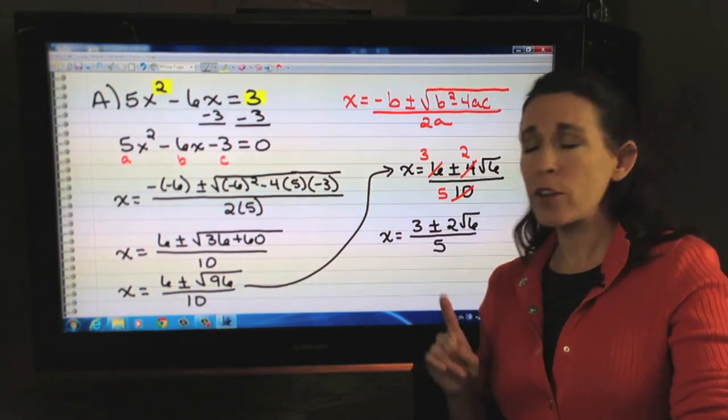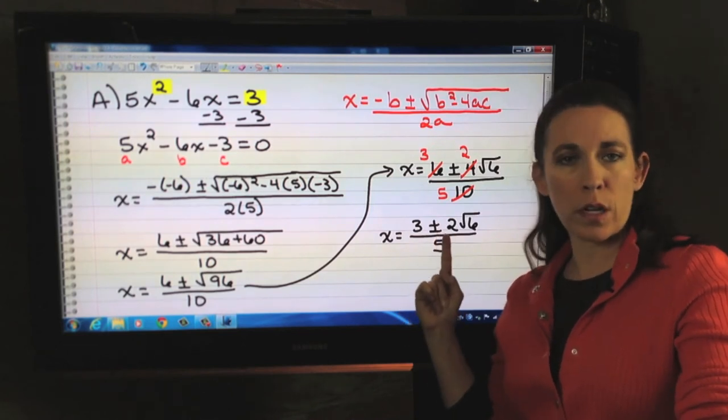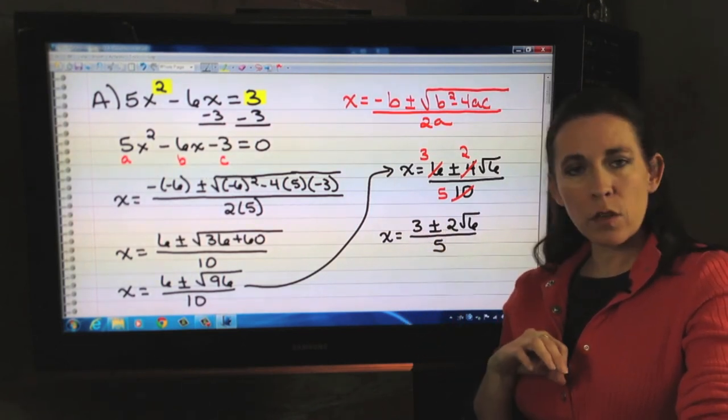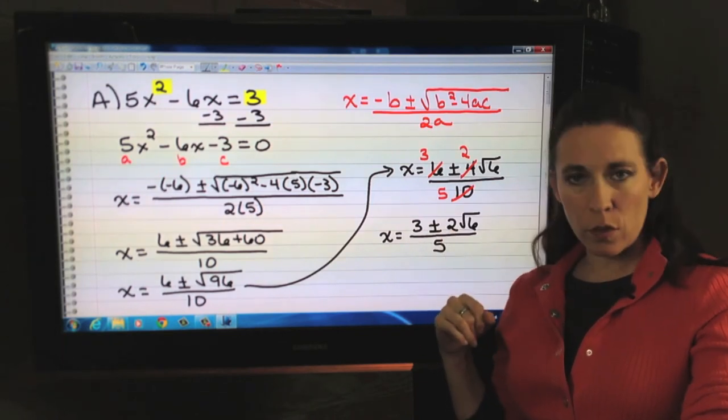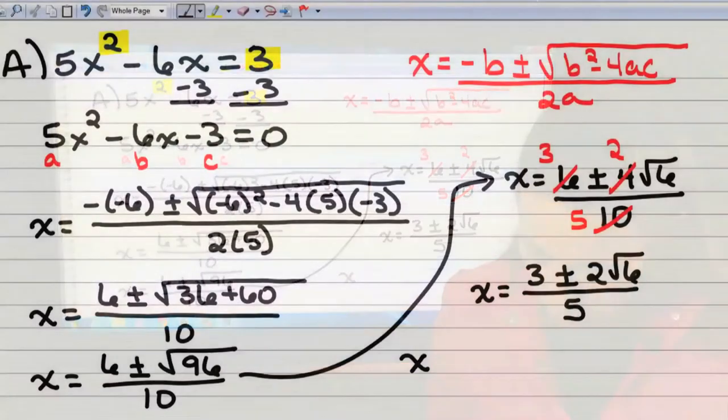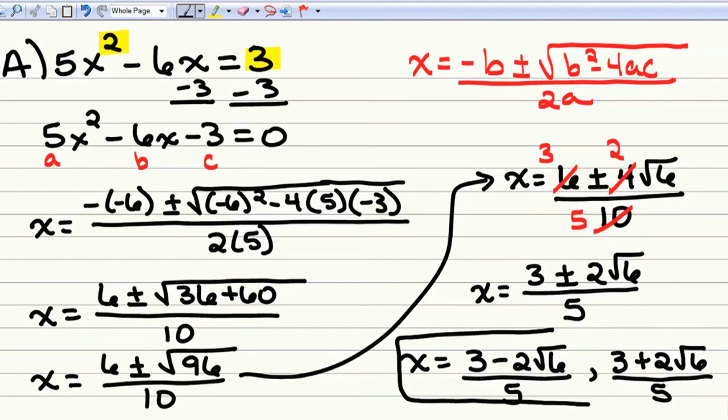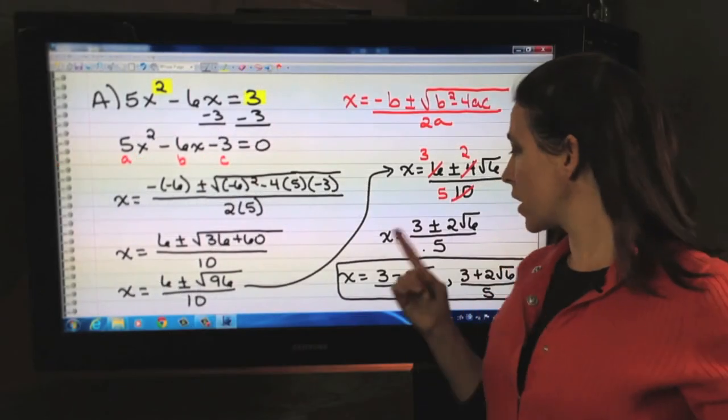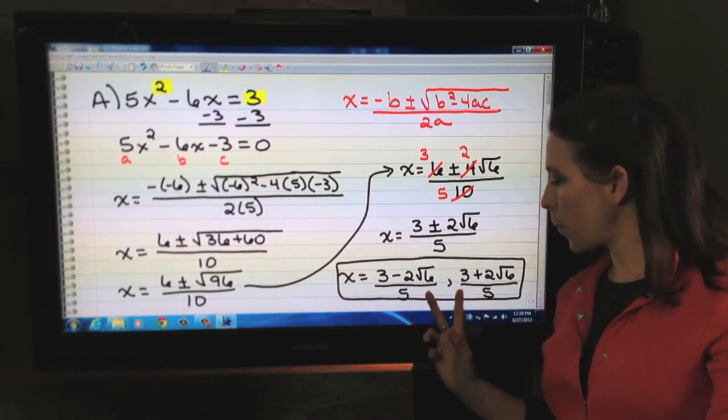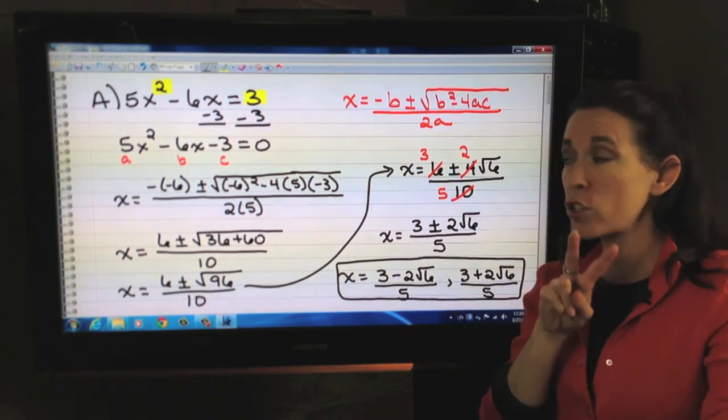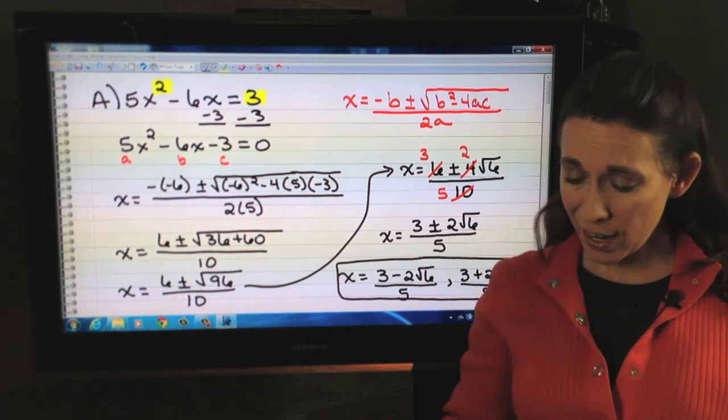So, that gives us 3 plus or minus 2 square root of 6 divided by 5. Now, just to be sure that you understand that this plus or minus means that we have two numbers here: 3 plus 2 square root of 6 over 5, and 3 minus 2 square root of 6 over 5. So, your teacher may request that you write both of them out. And there are your two solutions. And if your teacher lets you leave it in this form, bully for you. But a lot of teachers want to see both of it, just to make sure that you understand that there's two solutions.